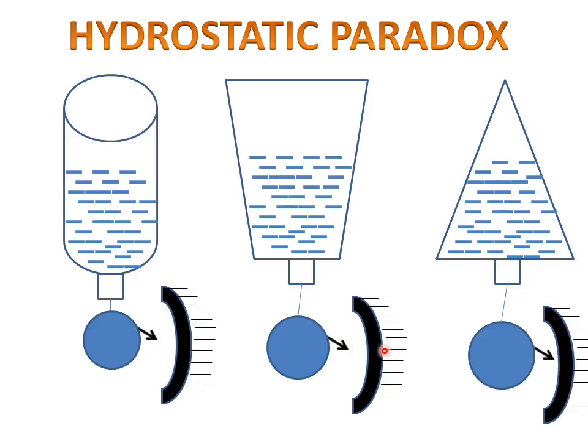So from this hydrostatic paradox, we can understand that liquid pressure does not depend upon the vessel shape. It depends on the height of the liquid in the vessel. Thank you.